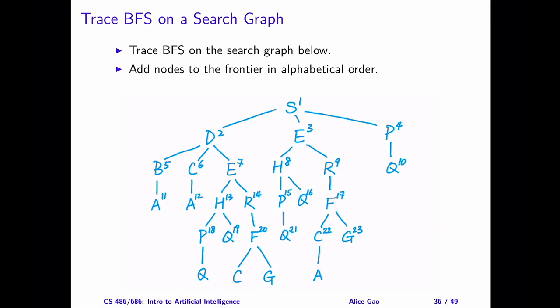As a practice question, try tracing BFS on the search graph by adding nodes to the frontier in reverse alphabetical order. That's everything for this example on tracing BFS on a search graph. Thank you very much for watching. I will see you in the next video. Bye for now.